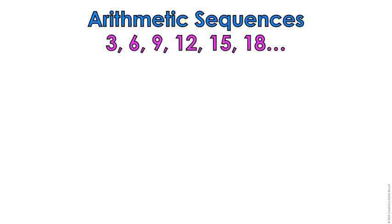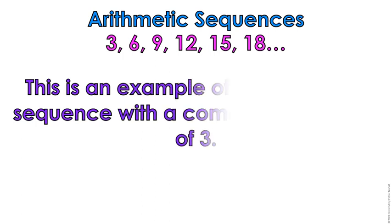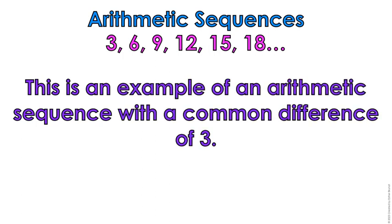So if you have 3, 6, 9, 12, 15, 18 — if I subtract two successive numbers (the word successive means numbers that are right next to each other), I would take 6 minus 3, 9 minus 6, 12 minus 9, 15 minus 12, 18 minus 15. If that is constant, then this is an arithmetic sequence with a common difference of 3.